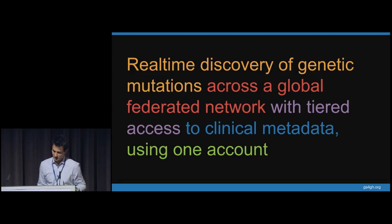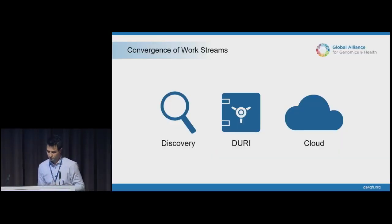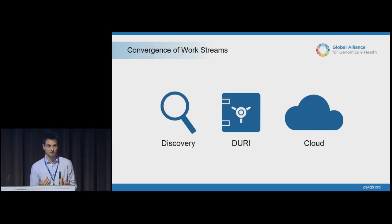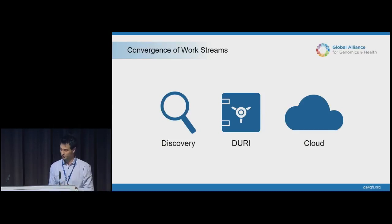So I've walked through how we pieced together the worldview to develop a real-time platform for the discovery of genetic mutations across a global federated network with tiered access to clinical metadata using a single account. The Duri work stream is the fundamental keystone piece in allowing us to converge on more interesting use cases that will enable data to be more findable through search APIs, more accessible through Duri, and more usable through cloud.